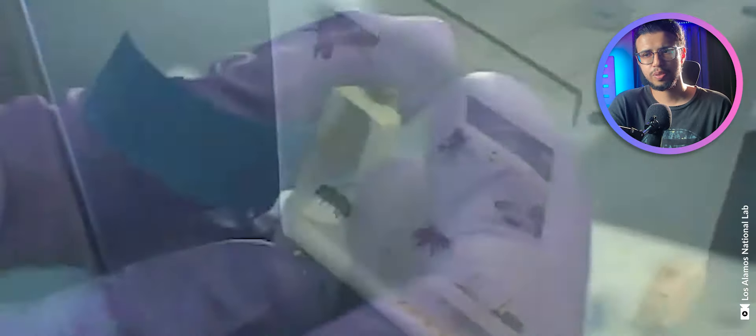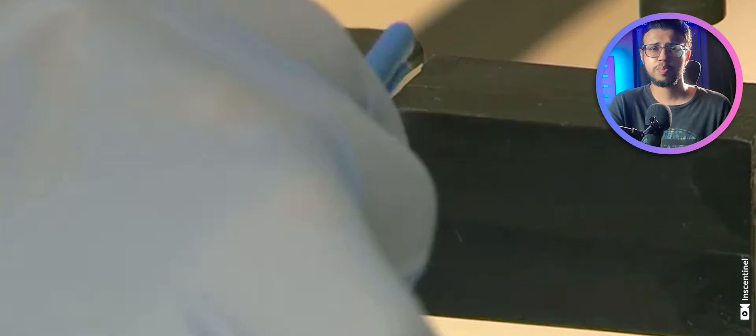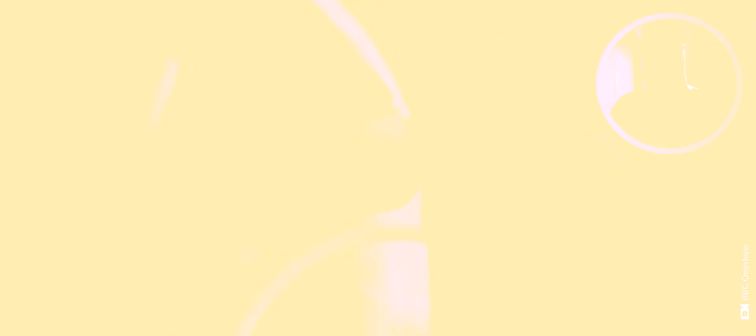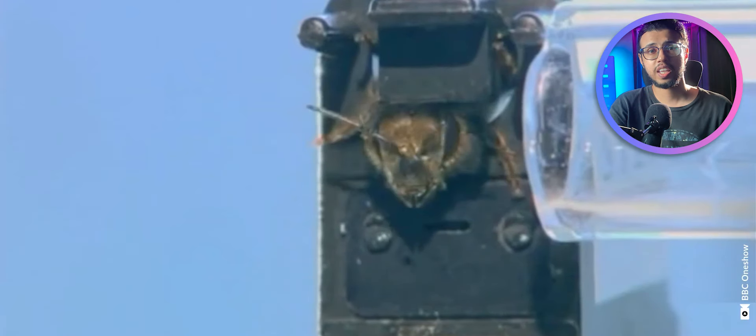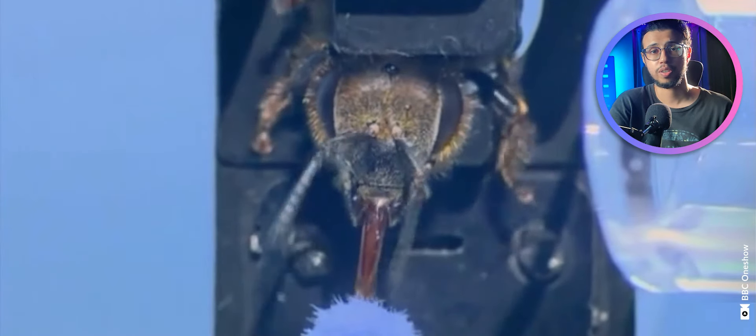They are then carefully placed into these containers, which do look a little claustrophobic, but the bees seem responsive so maybe it's fine for a short time. The bees are then exposed to a specific chemical vapor for six seconds and then fed sugar water at the end as a reward.